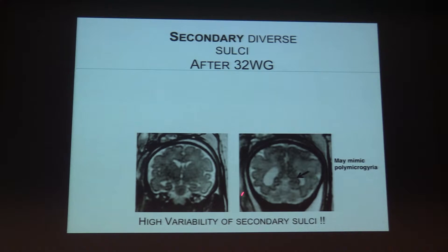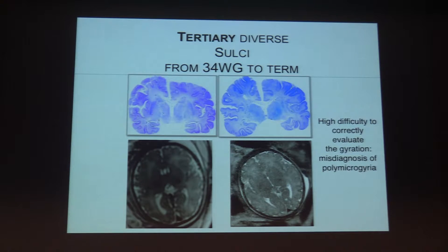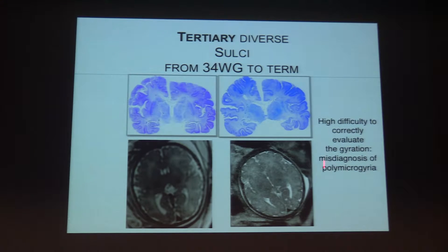If you are too late in gestation, you have a very complex sulcation pattern and it will be very difficult to identify all the different sulci. The best moment to perform MRI is around 30–32 weeks of gestation. Here is an example of MRI performed after 32 weeks: you can see advanced secondary fissures, and sometimes it is even difficult to recognize polymicrogyria, or distinguish it from tertiary normal fissures.